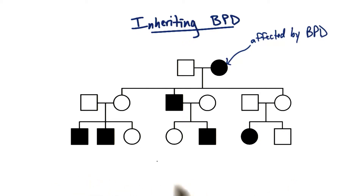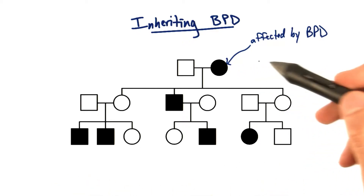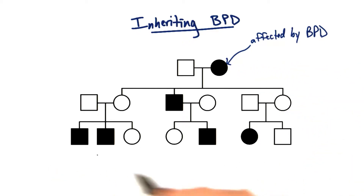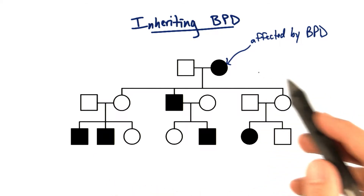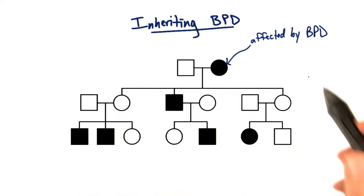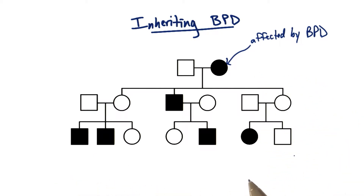Here's an actual pedigree tracking bipolar disorder in an Amish family. Now at first glance, you may think that this looks pretty familiar and may make you feel right at home. But like many complex traits, this pedigree looks different than it would for a single gene disorder.